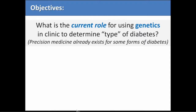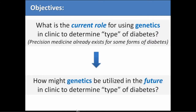I'll start by giving a little background on where we are right now. Something really exciting is that already in the space of monogenic diabetes, precision medicine exists, and it's really a model for us in thinking about how we can apply that to complex disease type 2 diabetes. Then we'll move to the future of how we can incorporate more complex disease genetics for subtyping type 2 diabetes.